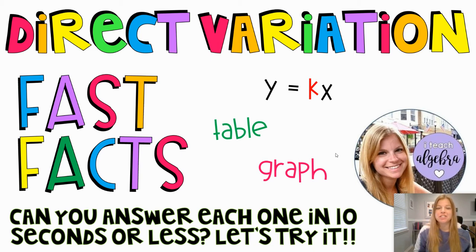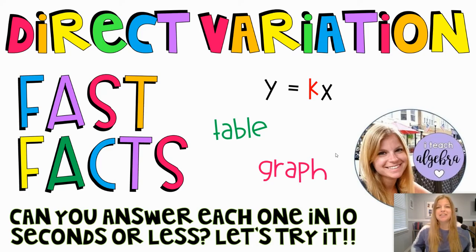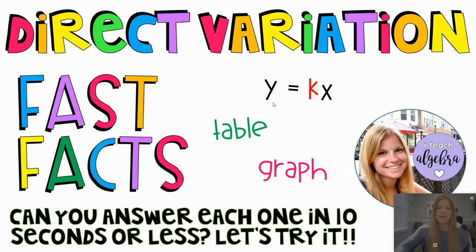Hi everyone, welcome to another edition of Fast Facts where today we're talking about everything about direct variation equations. We're going to go through three rounds: the first round is going to be 'is it a direct variation yes or no,' then we're going to talk about figuring out the direct variation from a table, and then figuring out what the direct variation is from a graph. These are going to be generally pretty quick.